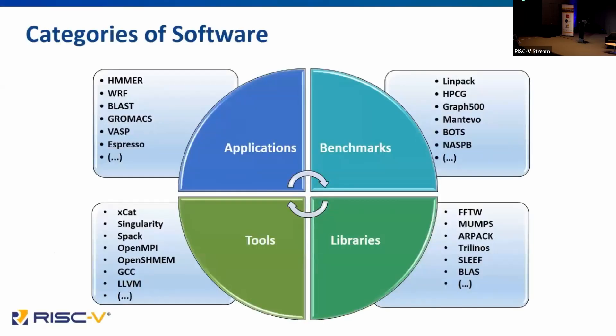The first big rock is: what software runs on RISC-V? This seems like a trivial question, but it's something we can use automation to answer. We can start with libraries, move up to benchmarks, tools, and applications, and then really drive this map and the gap analysis of where we have technology holes for RISC-V.